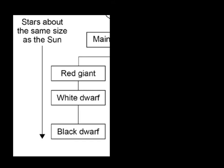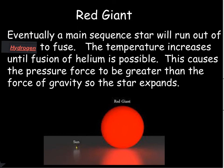Now we'll look at what happens to stars about the same size as our sun after the main sequence. A main sequence star will become a red giant, then a white dwarf, and finally a black dwarf. The first stage is the red giant: eventually the main sequence star will run out of hydrogen to fuse. At that point the pressure force of nuclear fusion decreases, the force of gravity takes over, and it causes the star to begin to shrink.